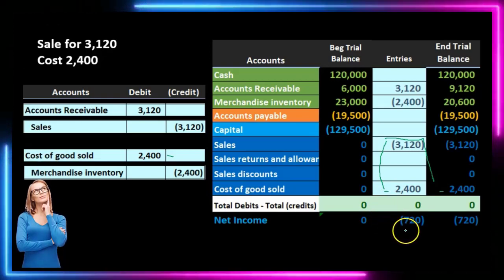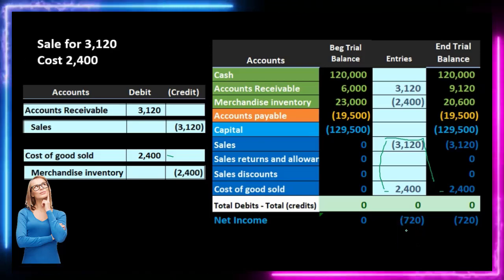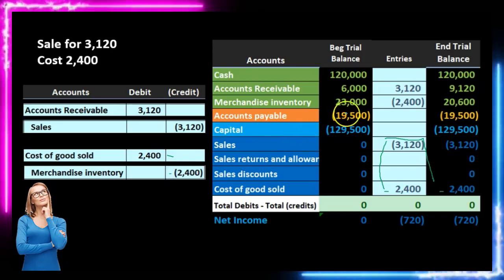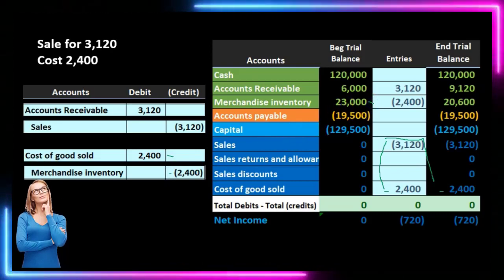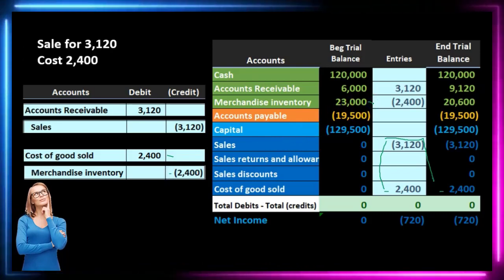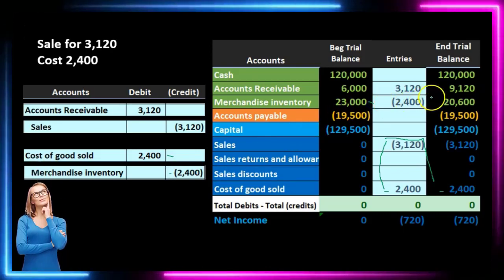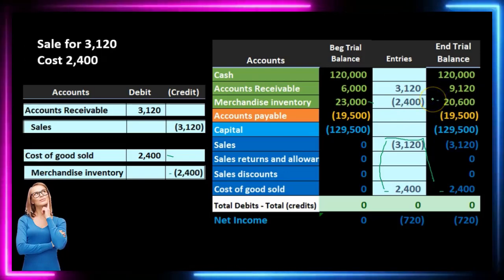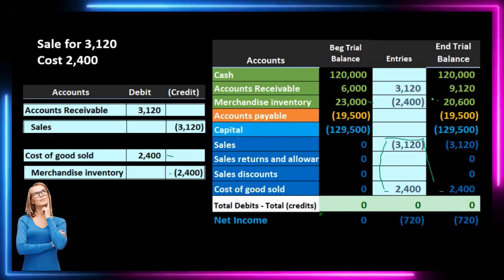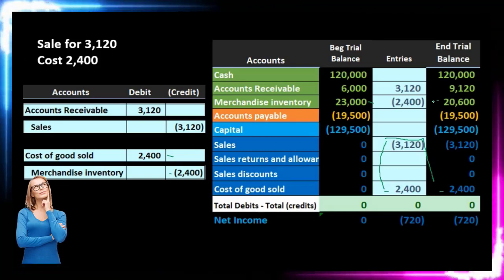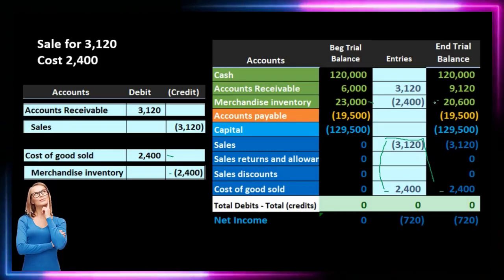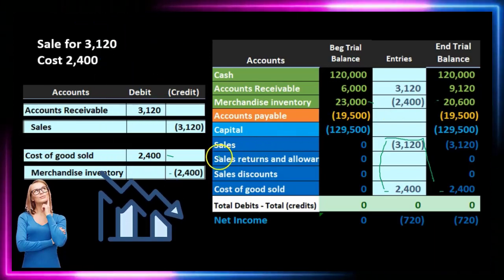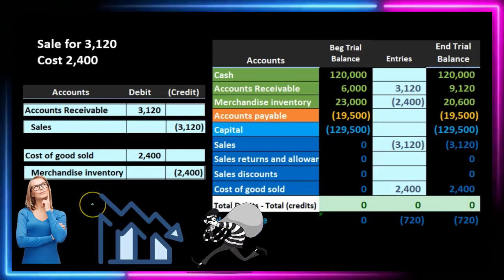This is not a loss — the brackets mean it's a credit balance. The merchandise inventory is taking the $23,000 down by $2,400 to $20,600, recording an accurate merchandise inventory as we go. It's accurate as far as sales go, but not accurate in terms of any loss, theft, or inventory shrinkage.